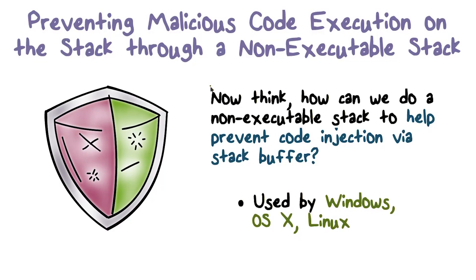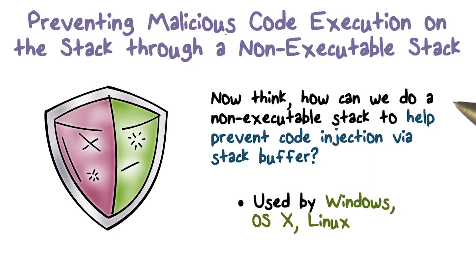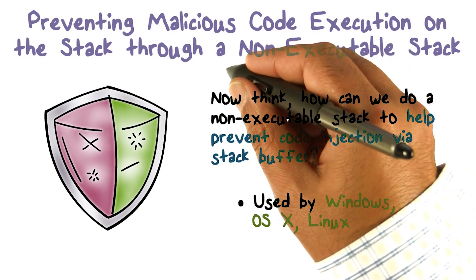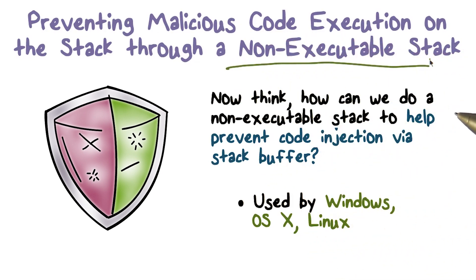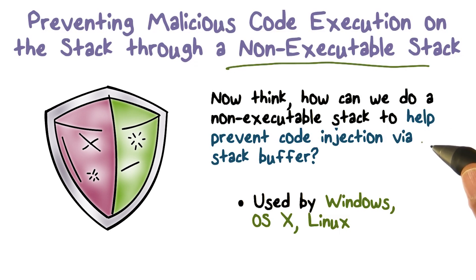All the memory protection stuff we have talked about — how can we use that to prevent malicious code execution on the stack? Remember, you're going to alter the return address, then you're going to insert some instructions where you're going to transfer control. So one of the things we're going to do is: what if we have a non-executable stack? That's one of the protections for code injection, because you inject your code, overwrite the return address to point to it, and then execute that code. That's how a successful exploit works.